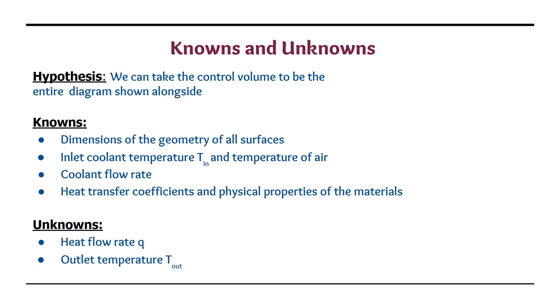The things that we know are: dimensions of the geometry of all the flat and curved surfaces present in the system, second thing temperature of the coolant at the inlet of the pipe that is T in and also the temperature of the air, third thing the volume rate at which the coolant flows in the tubes, and fourth thing the values of the heat transfer coefficients as well as the physical properties of the materials involved.